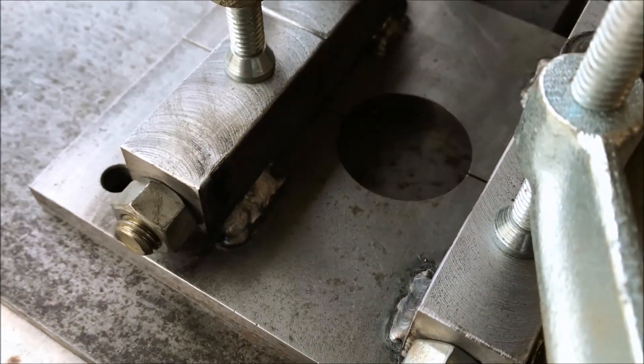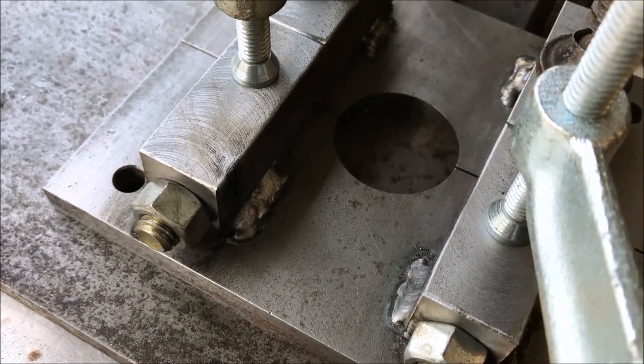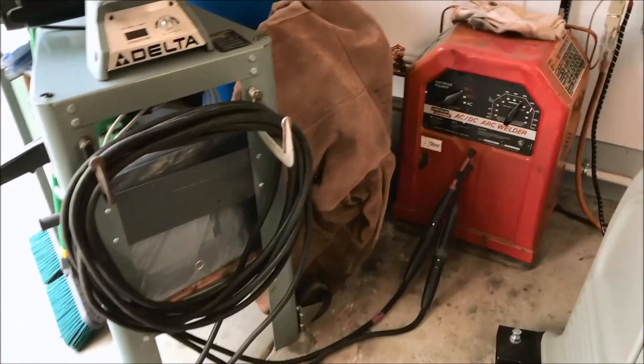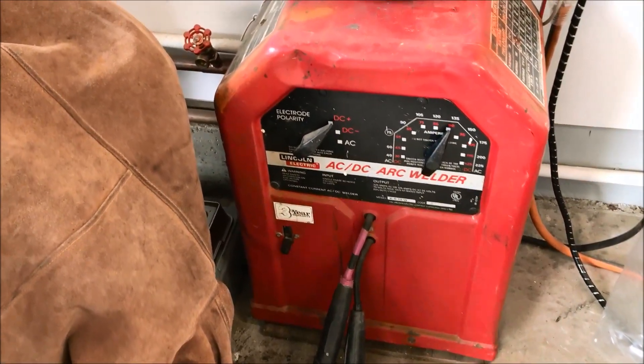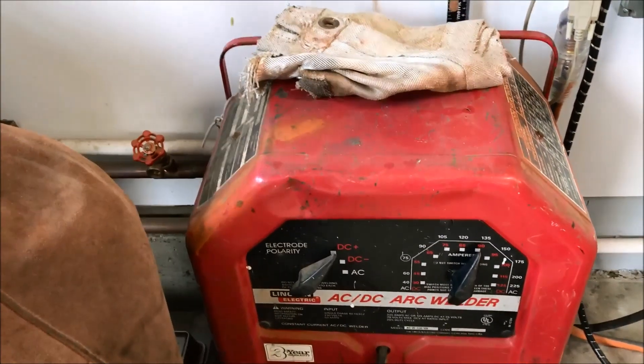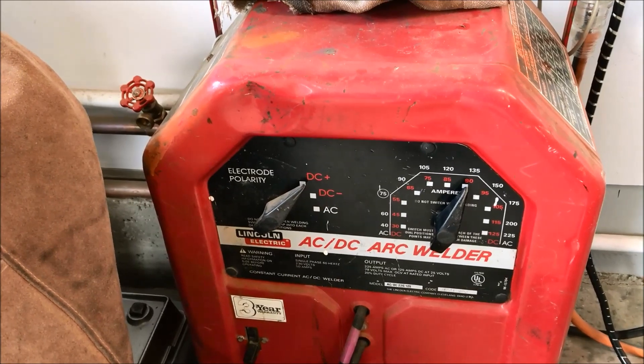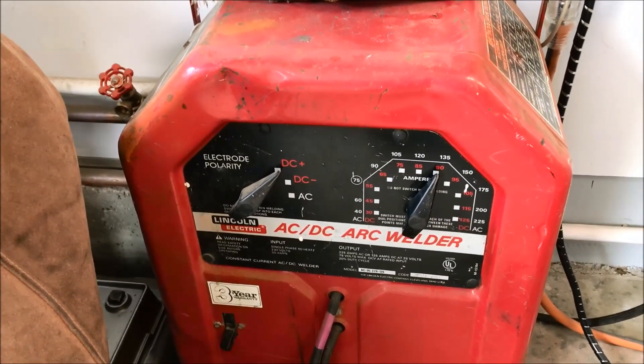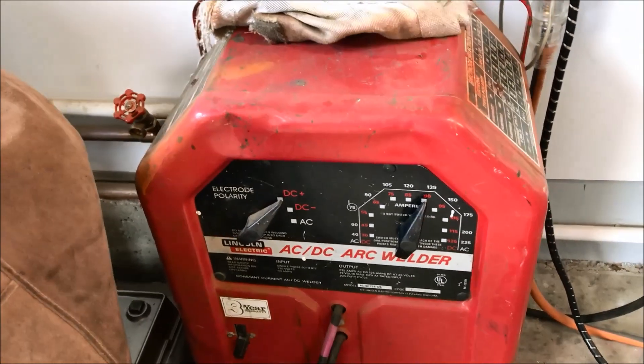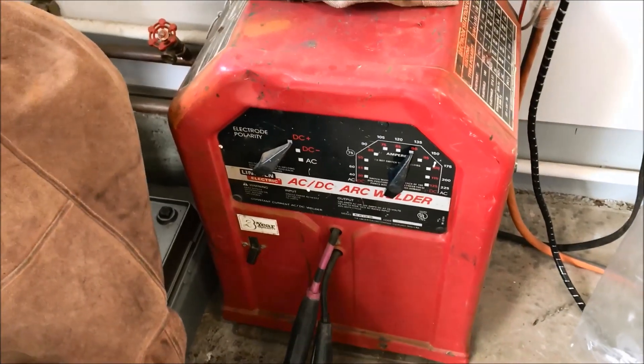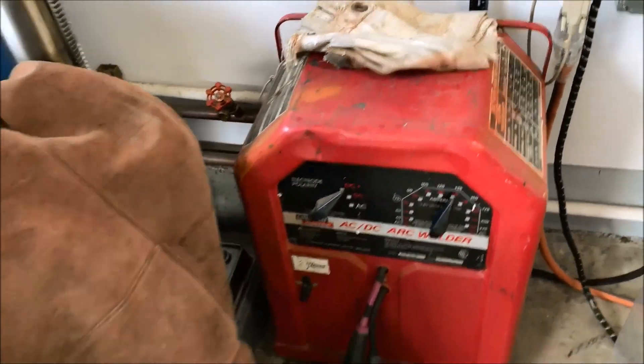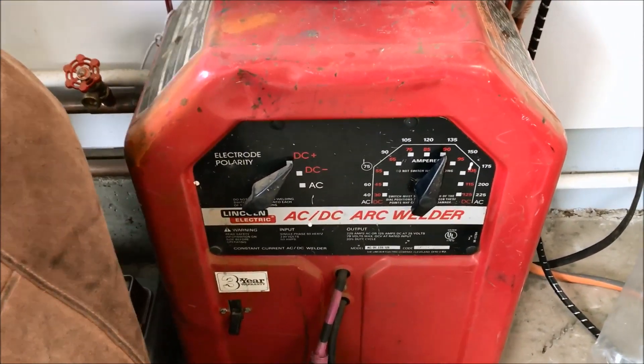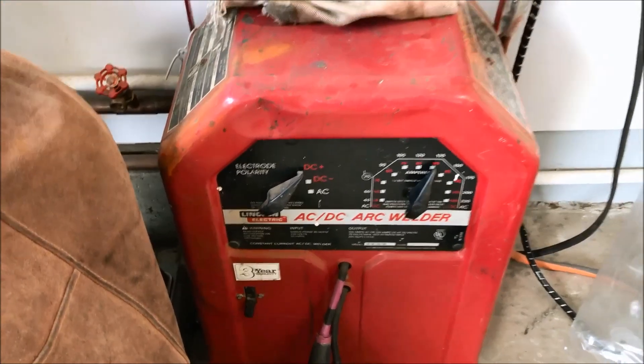I'm sure someone's gonna ask what kind of machine are you using. All I have is just one of these old Lincoln tombstone, this is the AC DC. If you're looking for one of these, look for this style that has the two knobs or two switches. It'll do both AC and DC. These are great home shop machines. You can pick them up, I got this one on Craigslist for 150 bucks, which is pretty good price. Usually they run around 300 dollars.